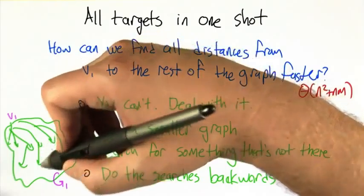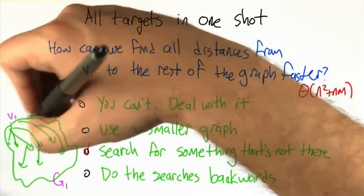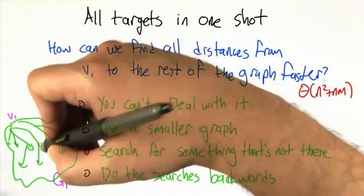that process, every single node in the graph will be annotated with the shortest path from v1 to that node.